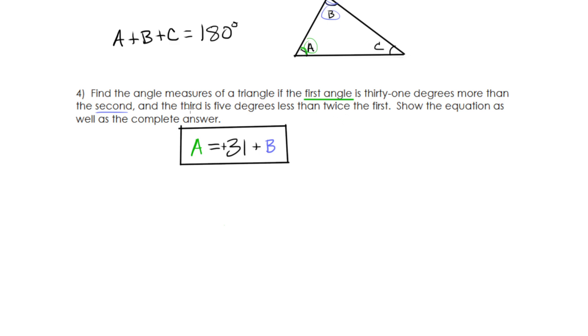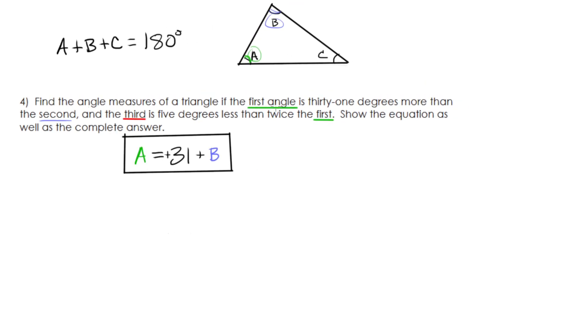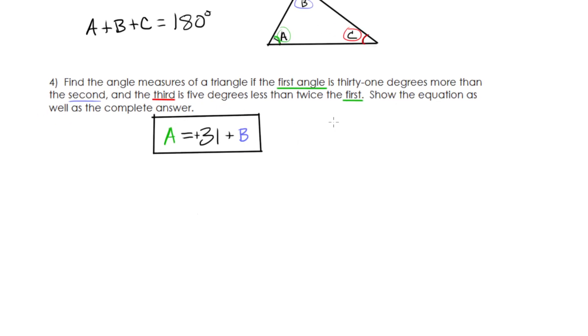Then the third. So let's go with red for the third one. The third is five degrees less than twice the first. So what is my first one? I'm going to call that my green one again. So the third one is going to be red. Alright, so I'm going to say C is, reading this, is five degrees less. So I'm going to write a negative five, then twice. So I'm going to have to have my twice the first, and the first is the A. So let's put that in green.